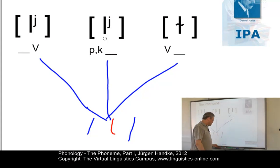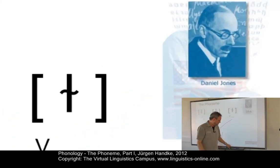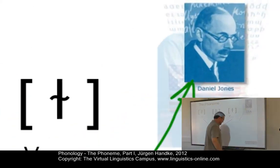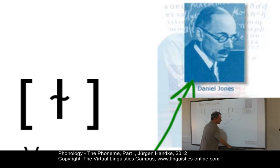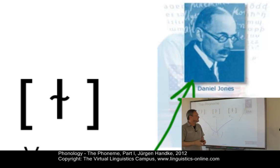This view is called the physical view of the phoneme, and it was first defined by Daniel Jones — many people would say the father of English phonology — at the beginning of the 20th century.